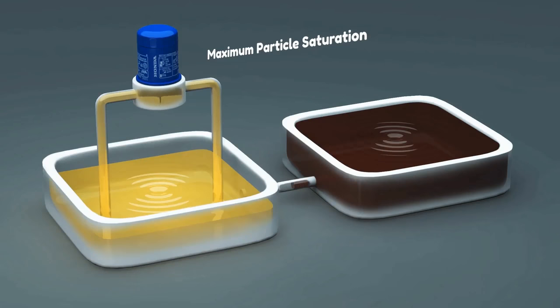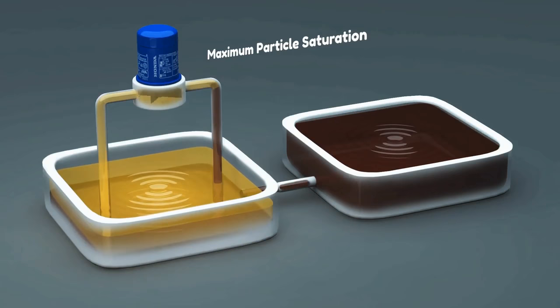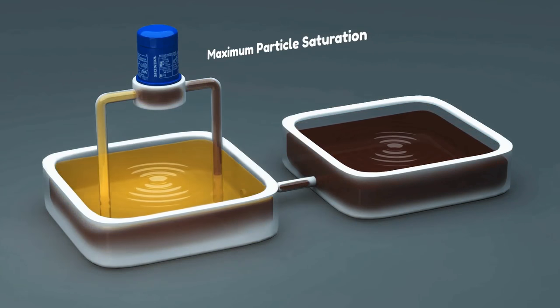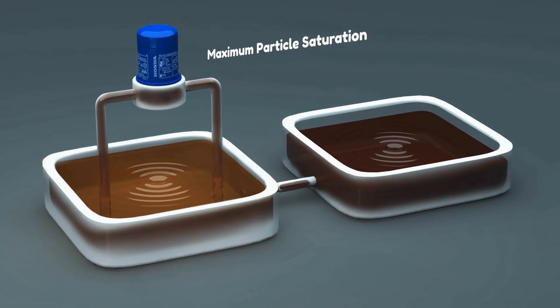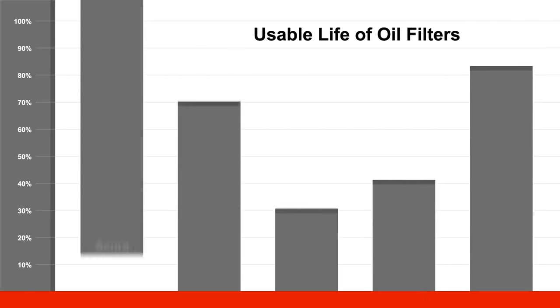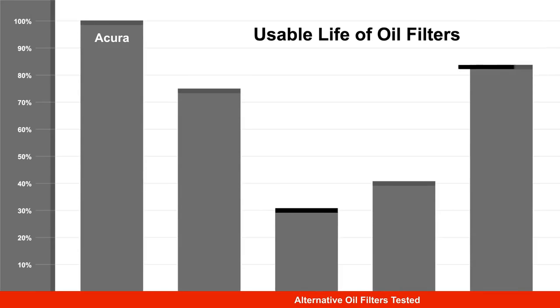Once the filter reaches maximum particle saturation, the oil filter can no longer keep the oil clean. The time it takes the oil filter to reach maximum saturation is called the life of the filter. The life of the aftermarket oil filters tested ranged from 31 percent to 83 percent of the life of the Acura Genuine oil filter.